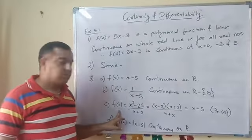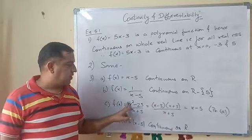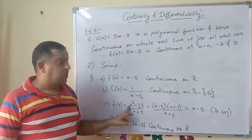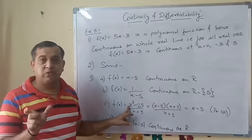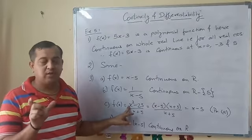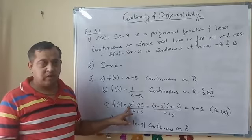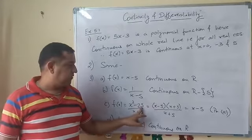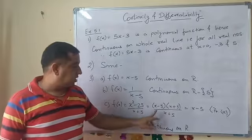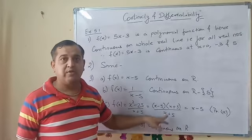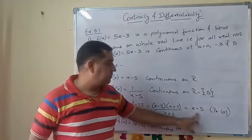Now see this third one: f(x) = (x² - 25)/(x + 5). Here you can apply the formula a² - b². 25 is the square of 5, so you get (x - 5)(x + 5). This x + 5 will cancel with x + 5, you get x - 5.